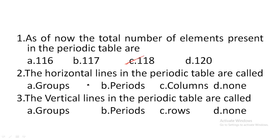Next one: the horizontal lines in the periodic table are called — option A: groups, option B: periods, option C: columns, option D: none of the above. Horizontal lines in the periodic table are called periods. Hence, option B is the correct answer.